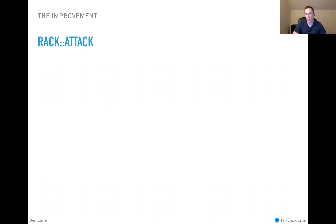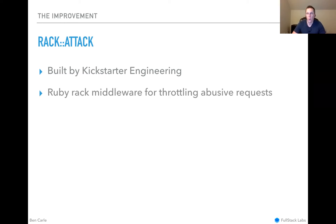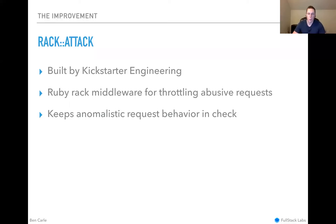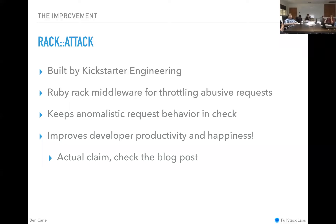This led us to the Rack Attack gem. It does all the things we need — built by Kickstarter Engineering a few years ago. It's a Ruby Rack middleware for throttling abusive requests, exactly what we're trying to do. It helps keep anomalous requests down and gives us control over different throttling profiles. And it improves developer productivity and happiness — that's an actual claim they make in their blog post. You don't have to stay up at night playing whack-a-mole. I found this to be very true and verified it later on.